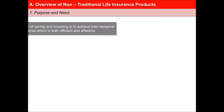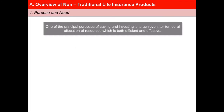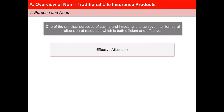One of the principal purposes of saving and investing in non-traditional life insurance products is to achieve inter-temporal allocation of resources, which is both efficient and effective. Inter-temporal allocation means allocation across time. The term effective here implies that sufficient funds are available to successfully satisfy various needs as they arise in different stages of the life cycle.